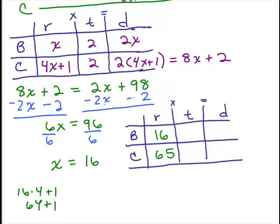Now we already knew their time was 2. So to get the distance each rode or drove, we multiply their rate times time. 16 times 2 is 32 and 65 times 2 is 130.